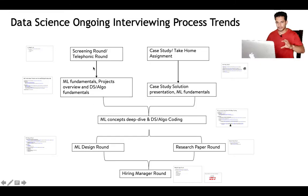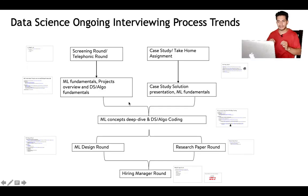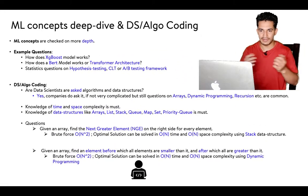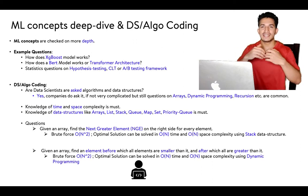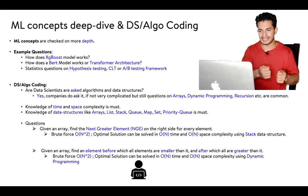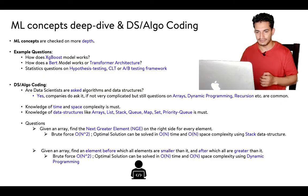To summarize so far: depending on the company, the process can be either a case study with presentation plus ML fundamentals, or a screening round followed by ML fundamentals, project overview, and DS/Algo. Apart from these, most companies will also have an ML concept deep dive and a DS/Algo coding round. In the ML concept deep dive, questions go into more depth — for example, how does XGBoost work, how does BERT work, how does the Transformer architecture look, and statistics questions on hypothesis testing, central limit theorem, or A/B testing.